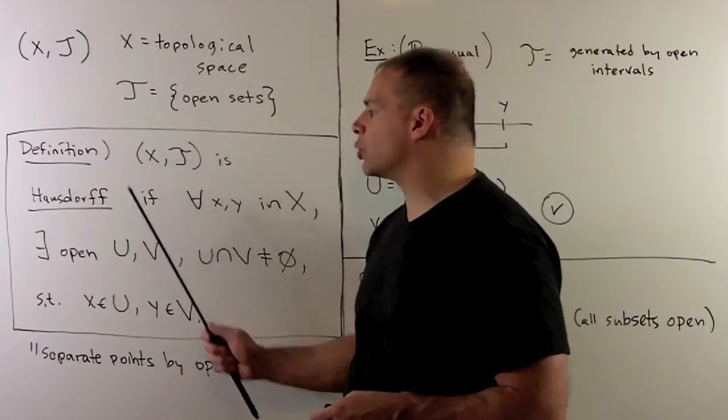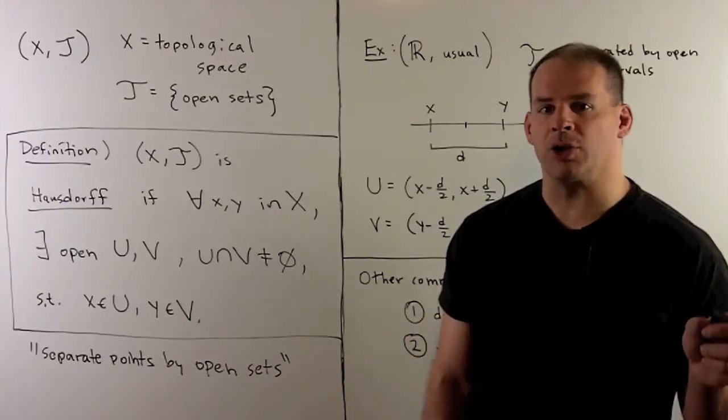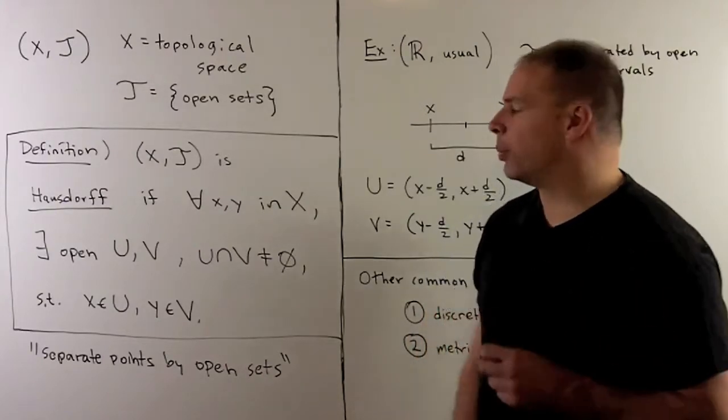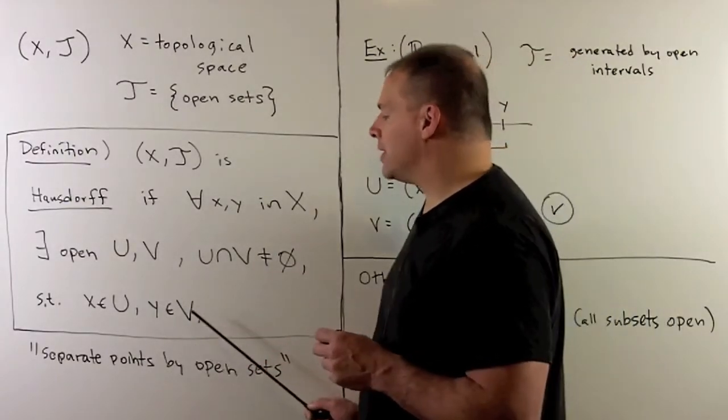We'll say (X,T) is Hausdorff if, for any two distinct points X and Y in our space, there exists open subsets U and V, disjoint, such that X is in U, Y is in V.